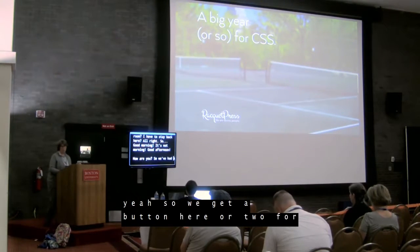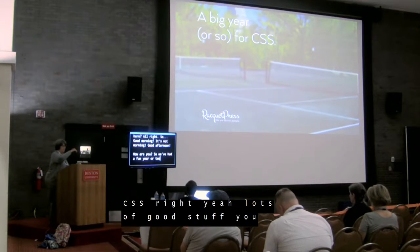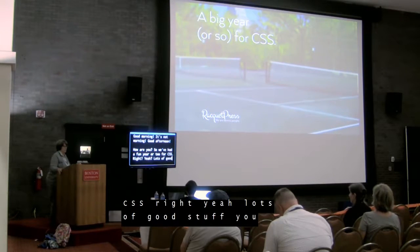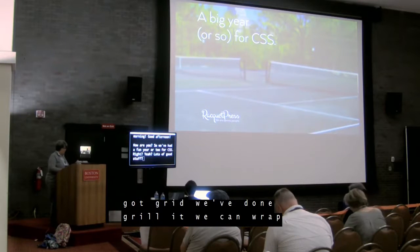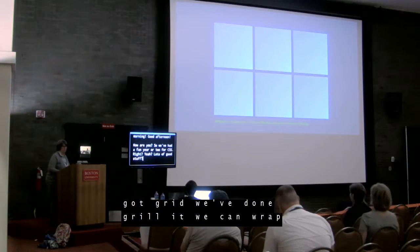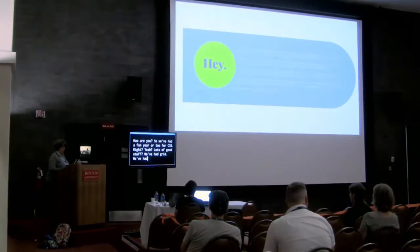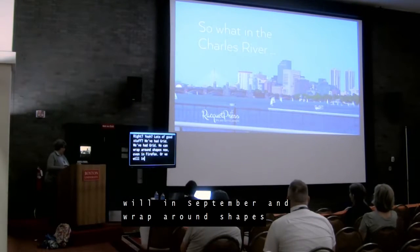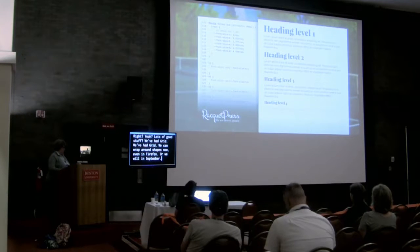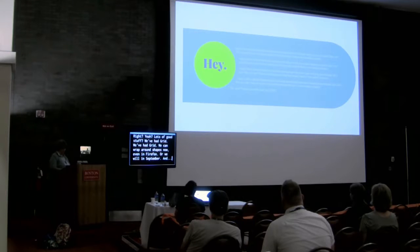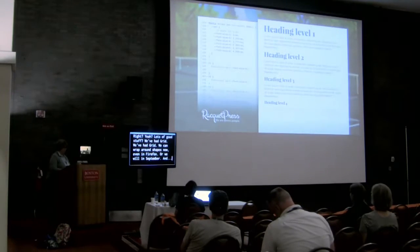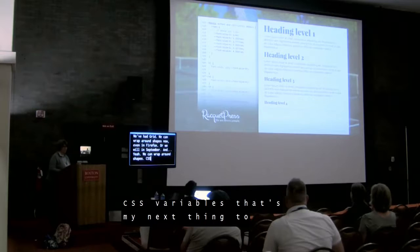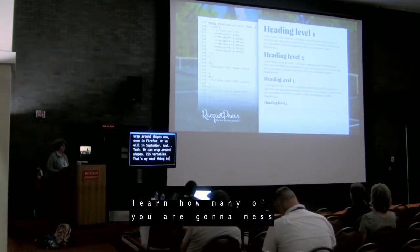So we've had a fun year or two for CSS. Lots of good stuff — we've got Grid, we can wrap around shapes now even in Firefox, or we will in September. CSS variables — that's my next thing to learn. How many of you are going to mess with that?